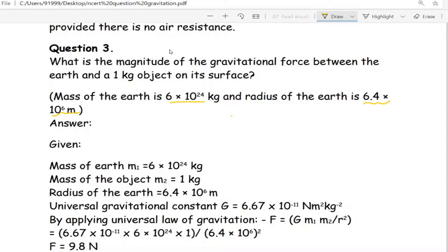Here the question is to find the magnitude of the gravitational force. That is, we need to find F gravitational force. The given data in this question are: mass of the earth m₁ = 6 × 10²⁴ kg, the mass of the object on the surface of the earth is 1 kg, and the radius of the earth is 6.4 × 10⁶ m.